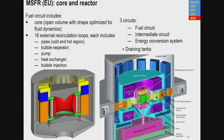The Molten Salt Fast Reactor example is developed in European projects (EVOL and ongoing). The core is an optimized empty volume for fluid dynamics with 16 recirculation loops each including pipes, bubble separator, bubble injection, pump, and heat exchanger. Three circuits are used: a fuel salt circuit, an intermediate fluoride salt circuit (without fuel), and an energy conversion system based on a steam-water cycle, with draining tanks for emergency. Operating temperatures are 700-800°C, making it a very high-temperature system.